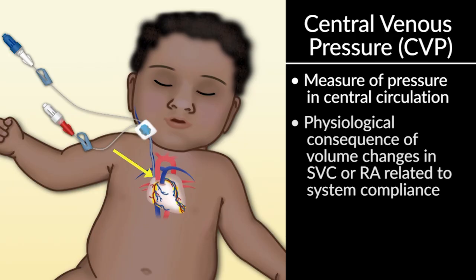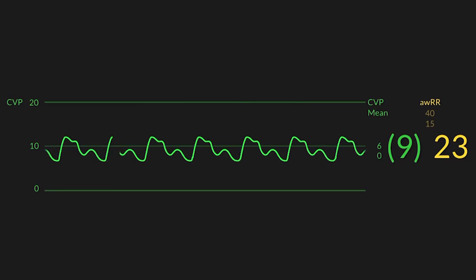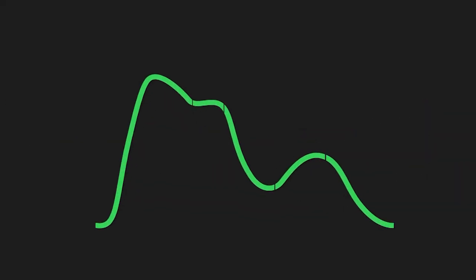What we see here, when we look at a CVP trace, we see a volume moving in and out of the right atrium or the superior vena cava being represented as a pressure here. This pressure, we're going to talk about this trace as one beat of the central venous pressure, and you can see that there's a couple of waves here.